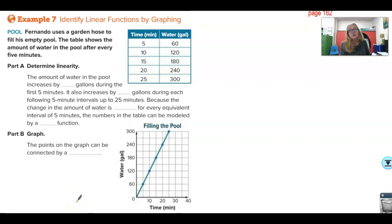Identify linear functions by graphing them. Well, you can also do that. You can go ahead and graph them. The easiest way to graph these is to go to the Desmos graphing calculator and put the points in and let the calculator do it for you. Or you can do it the old-fashioned way if you happen to have some good old grid paper laying around and you just like graphing. Fernando uses a garden hose to fill his empty pool. The table shows the amount of water in the pool after every five minutes. Determine linearity. The amount of water in the pool increases by five gallons during the first five minutes. All right, well, here we increased this one up by 60, this one up by 60, this goes up by 60, and this goes up by 60. And these are each five, five, five, five. Because this is constant, it makes a straight line. It's linear.